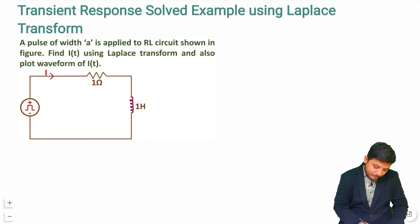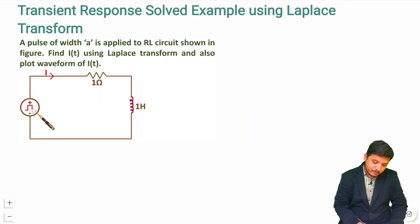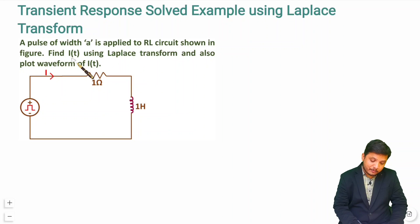Let us see the question. A pulse of width A is applied to an RL circuit as shown in the figure. The source generates a pulse with width A, and the RL circuit is given. We are required to find I(t) using Laplace transformation, and also to plot the waveform of I(t).